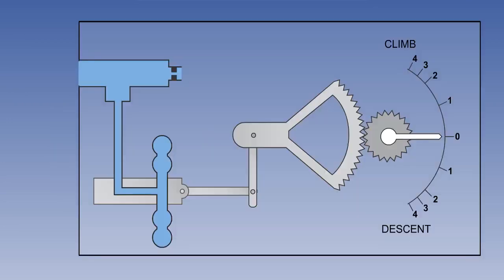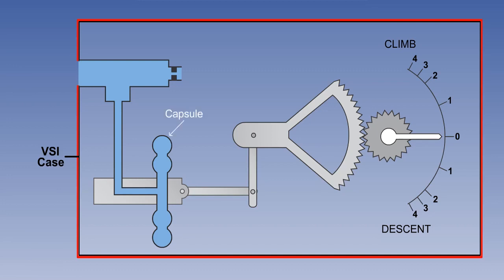So how does the VSI work? The VSI may be thought of as an airtight instrument case with a pressure-sensing capsule and a metering unit inside. Both the pressure-sensing capsule and the metering unit are fed with static air. Inside the metering unit is a restrictive choke, and the purpose of the choke is to slow down the rate at which static pressure can change within the airtight instrument case.